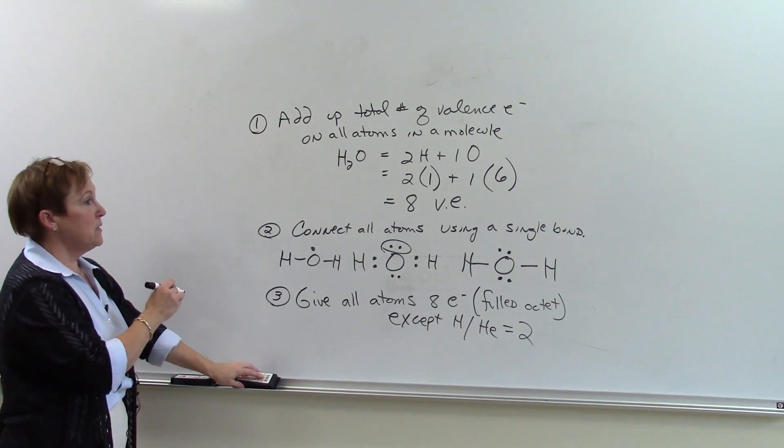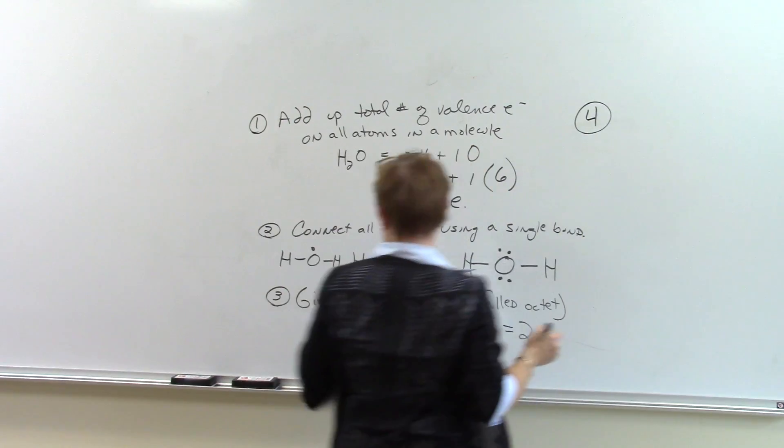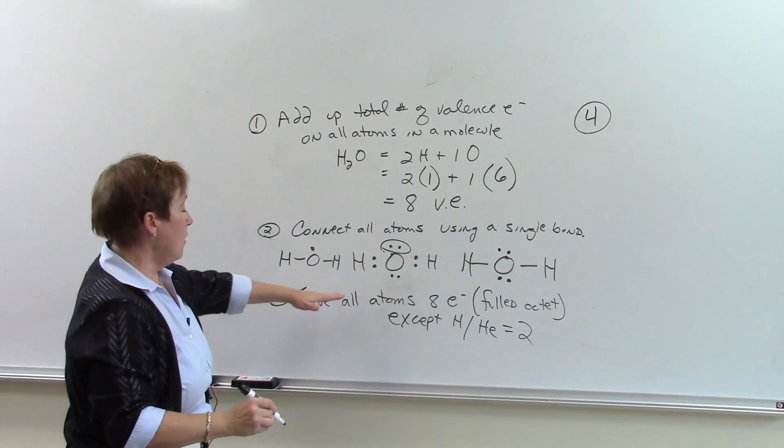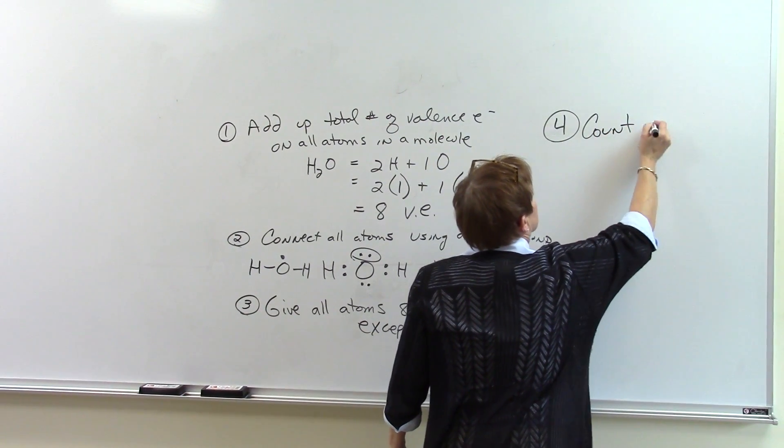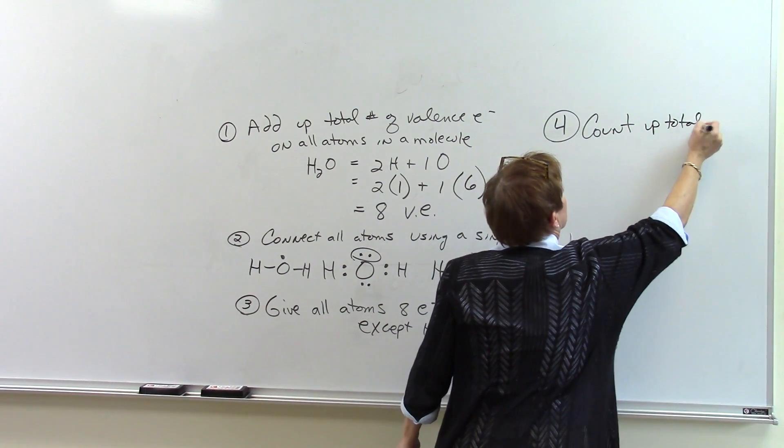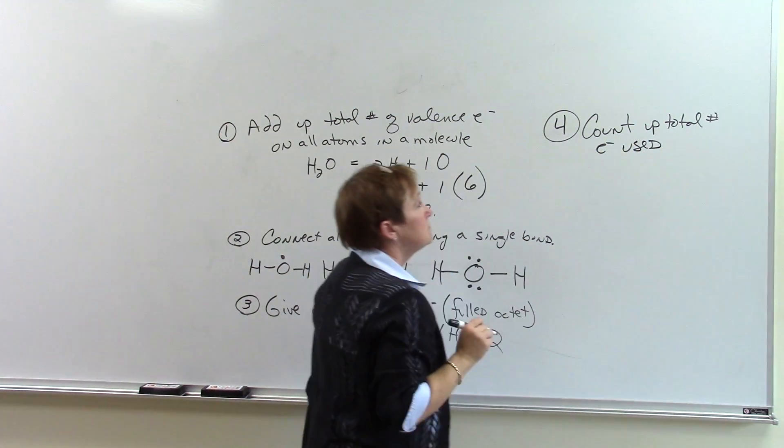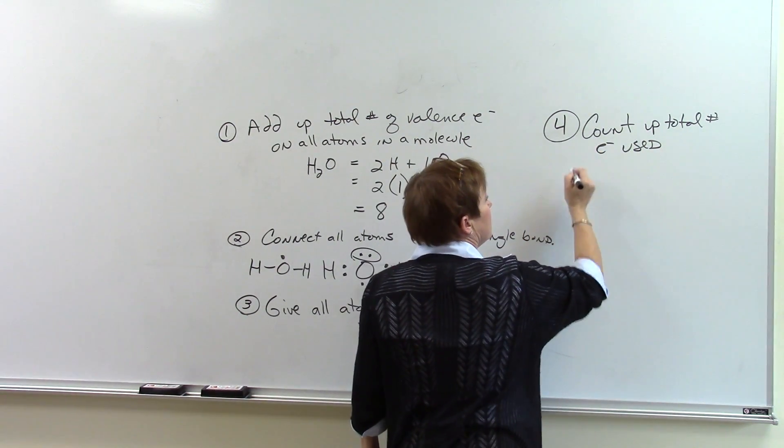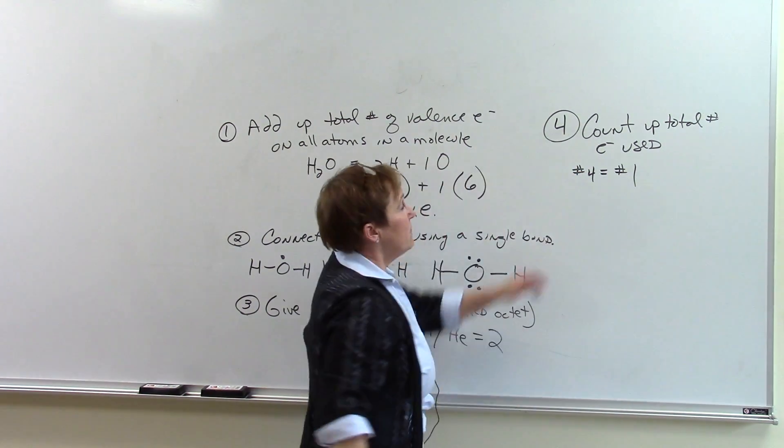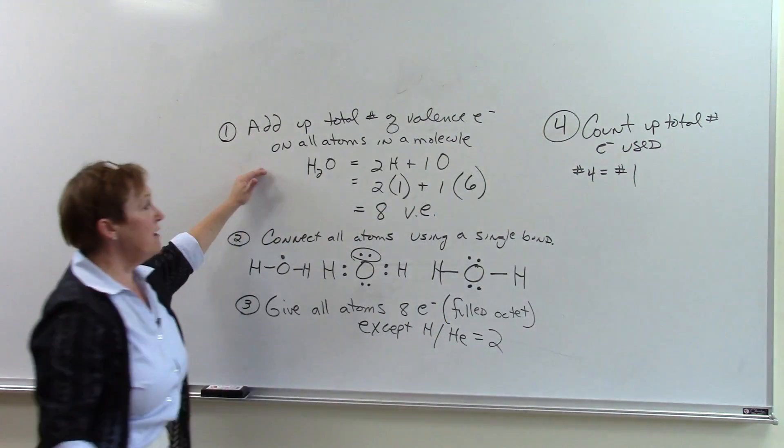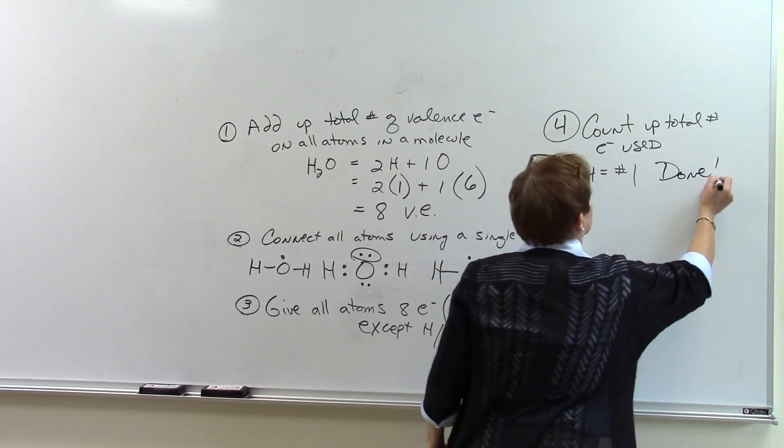Now, after we go ahead and do that, what's our next step? All atoms have eight. Now I count up total number of electrons used. If number four equals number one, if I used as many electrons as I have, I am done.